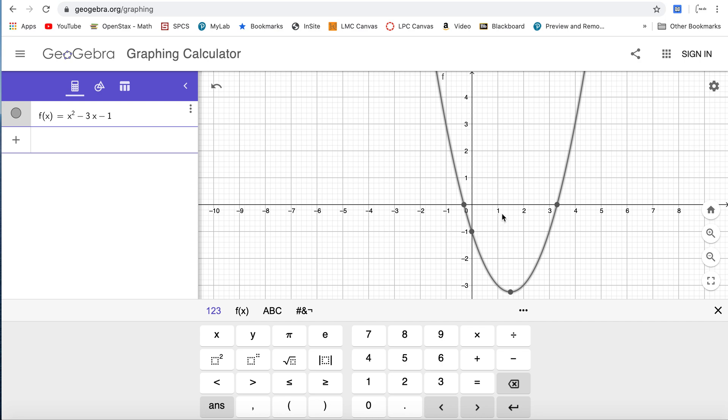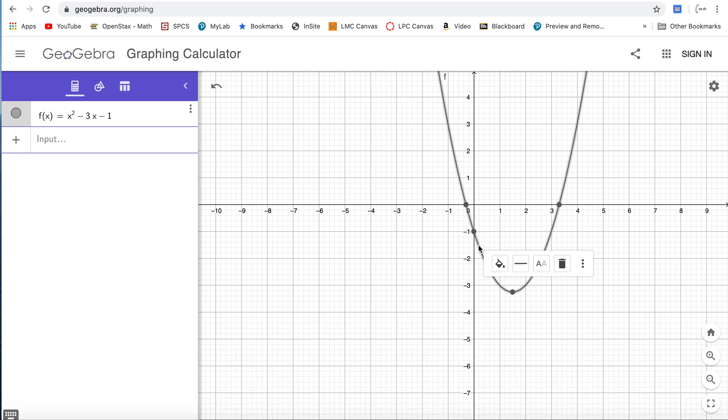If you notice here we have our graph and when you click on it you see some key points: the x-intercept, the vertex, and the y-intercept. But now I want a table of values. My table is empty.